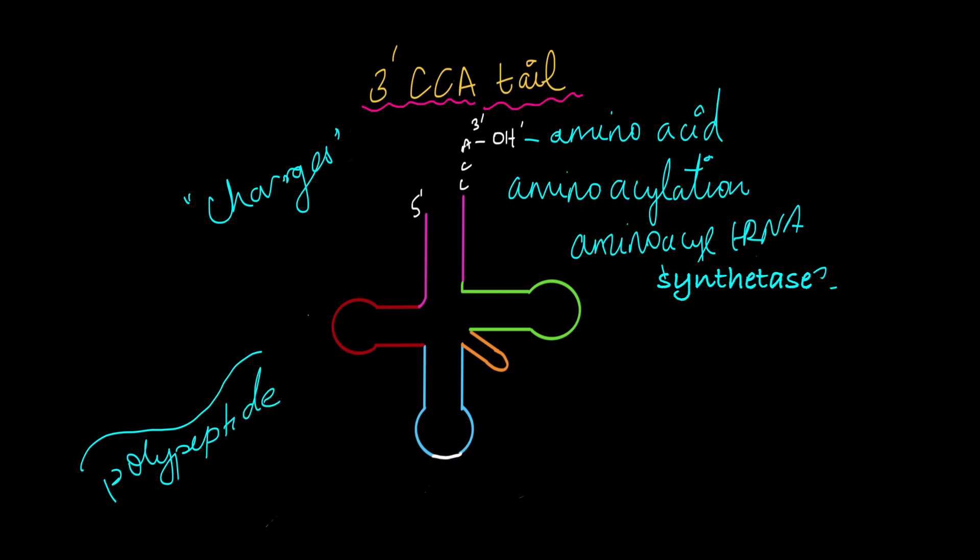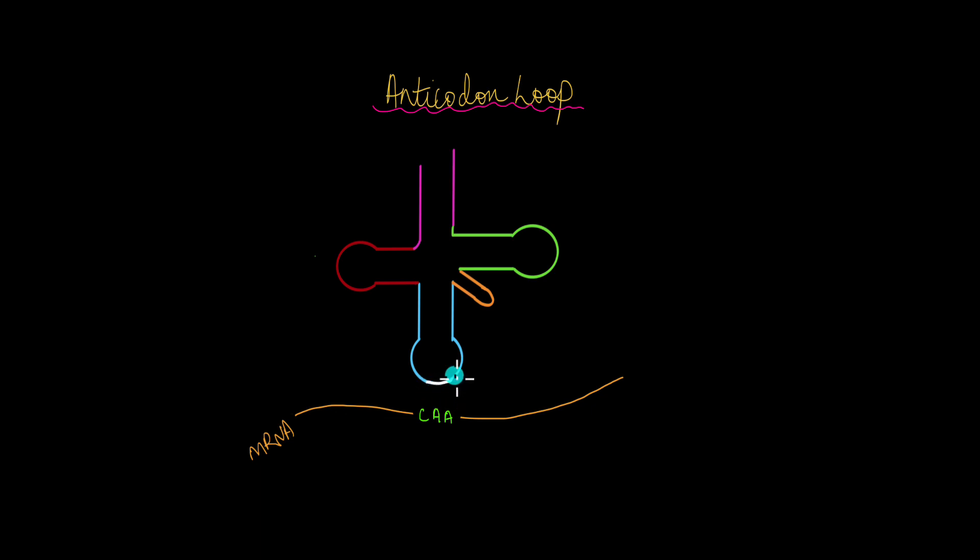Now let's take a closer look at the anticodon loop. So the anticodon loop is found at the bottom of the cloverleaf secondary structure and it has nucleotide bases complementary to the mRNA sequence. So if this is CAA, then this will be GUU. Which amino acid do you think will be attached to this 3' OH end? Do you think it depends on the sequence of the anticodon loop?